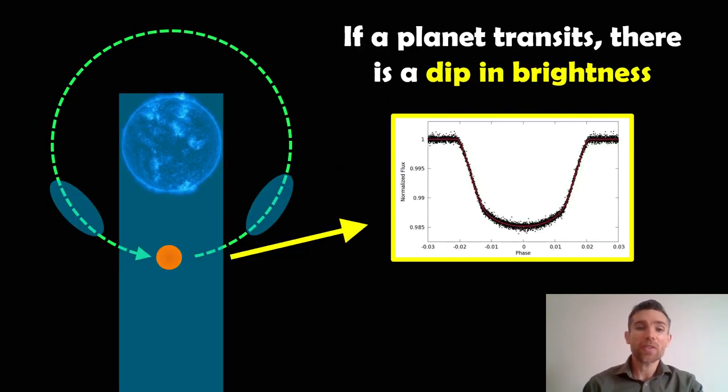So the transit method, if you haven't come across it before, but I'm assuming you probably have if you're watching this video, that's where a planet will pass in front of the star. It will block out some light, and we get this nice-looking dip in brightness there. So on the right-hand side, you've got the brightness of the star, which is normalized to one. So one would be the normal brightness of the star, and then we see deviations away from that. And it gives us a nice symmetric dip in brightness as it blocks out the light.